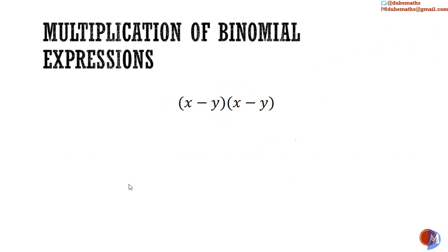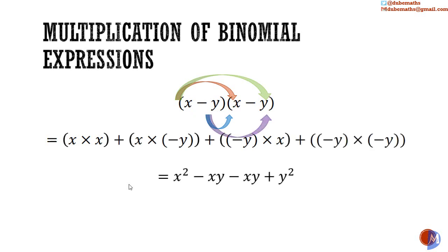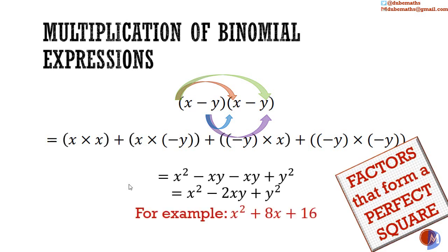What about x minus y all squared, or x minus y multiplied by x minus y? Multiplying, we get x squared plus negative xy plus negative xy plus y squared, which further simplifies to x squared minus 2xy plus y squared. Starting with x squared minus 2xy plus y squared and getting to the factor x minus y all squared is another form of factorization: factors that form a perfect square — for example, x squared plus 8x plus 16. It is difficult to spot the relationship and can be solved as any other quadratic. We'll get back to it in a section much later on called completing the squares.